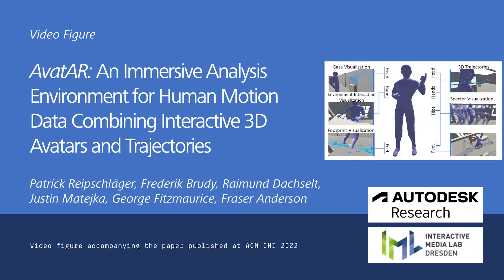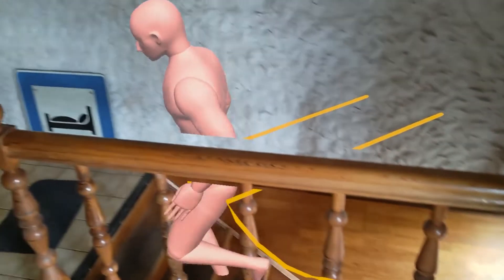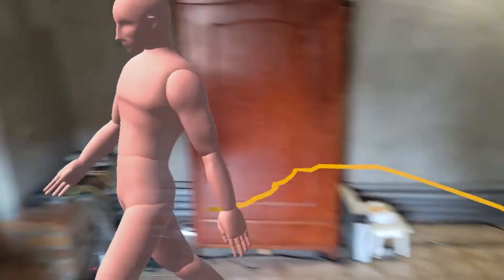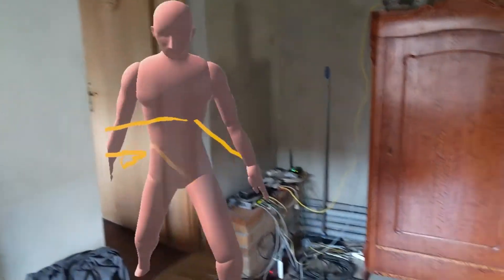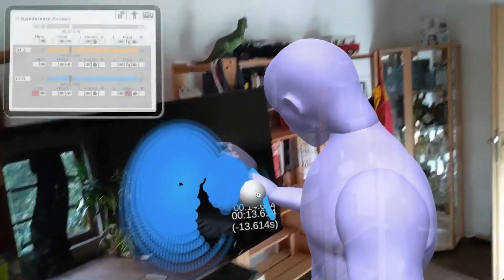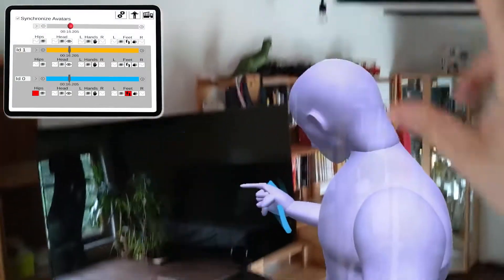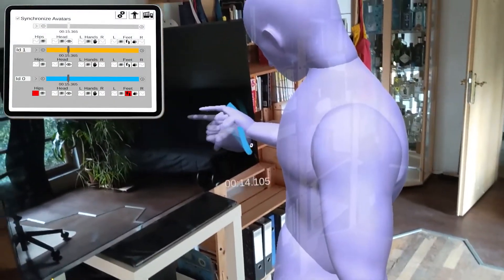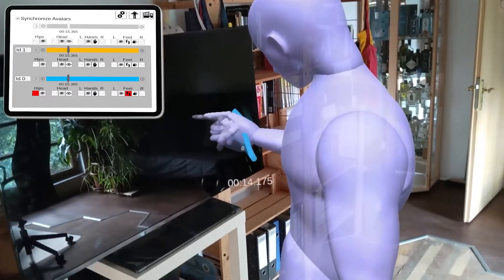We present Avatar, an augmented reality environment for analyzing recordings of human motion data to gain insights into how humans utilize and interact with their surrounding environment. We combine head-mounted augmented reality with a tablet device to display and manipulate in-situ visualizations of time-varying motion data directly in the environment in which it was recorded.